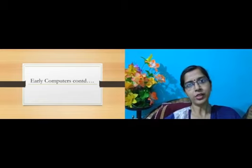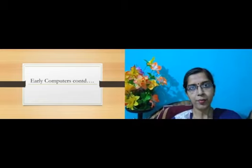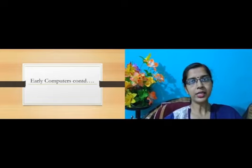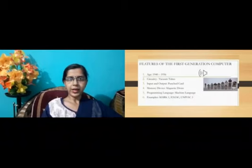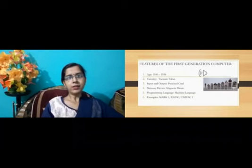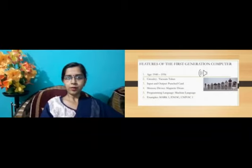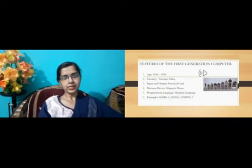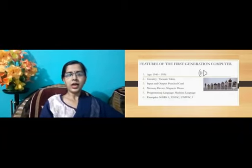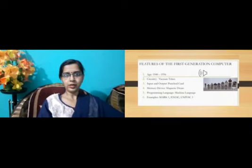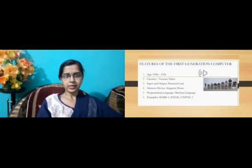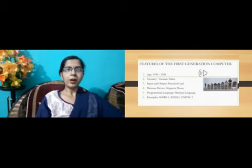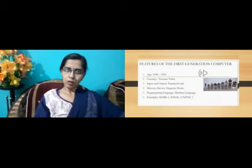Today we continue with our topic. We will study about the different early computers of the 20th century. The evolution of the modern age computer has been divided into generations based on the technology used in them for input, processing, output and storage. The first generation of computers, designed from the year 1940 to 1956, witnessed the use of vacuum tubes. A vacuum tube is a sealed glass tube which contains a near vacuum and allows free passage of electric current. The first generation computers also witnessed the use of punched cards for input, output and storage.